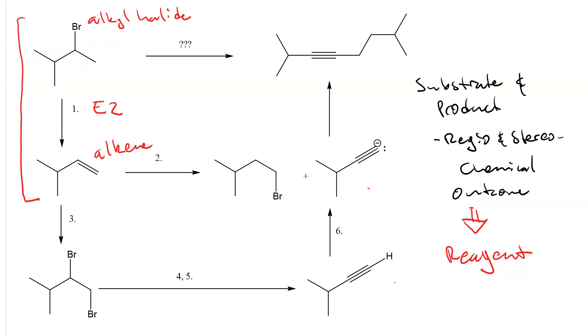This alkene was formed by Hofmann E2. Hofmann means we needed a sterically hindered base like tert-butoxide. So, that is our first reagent.